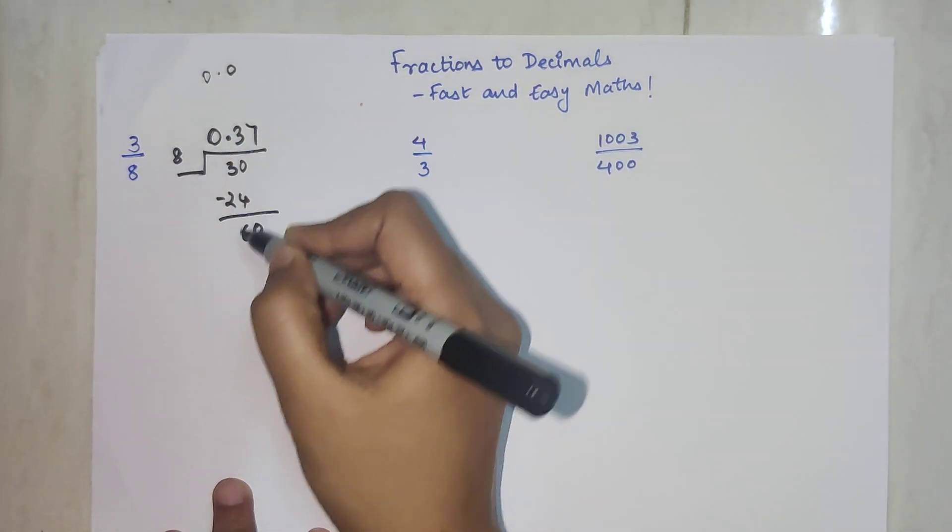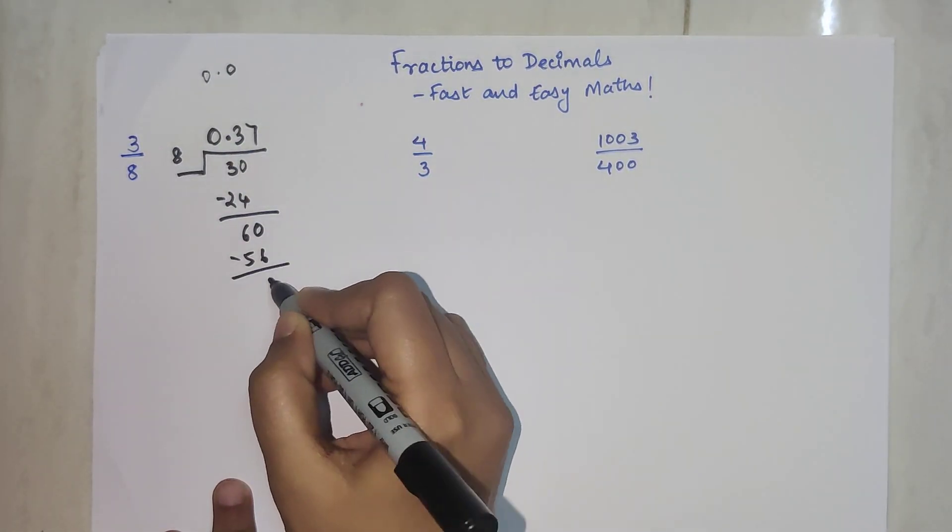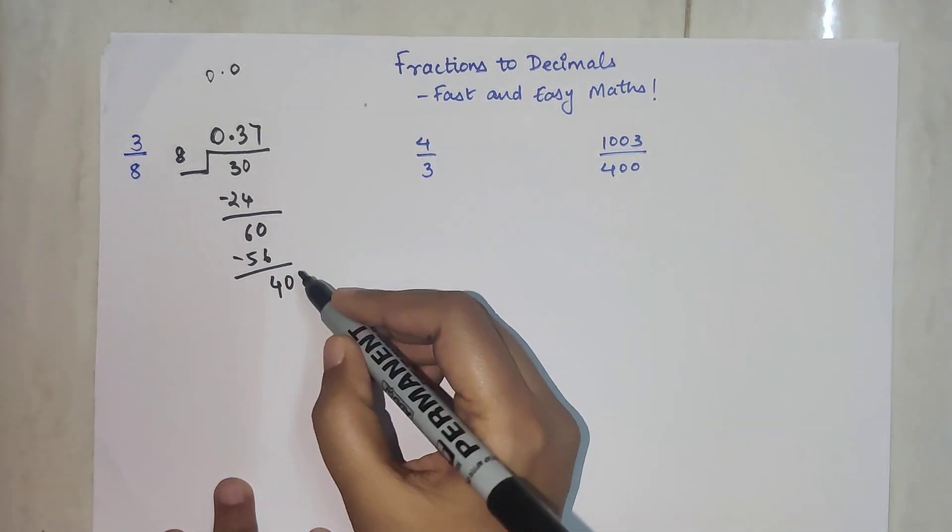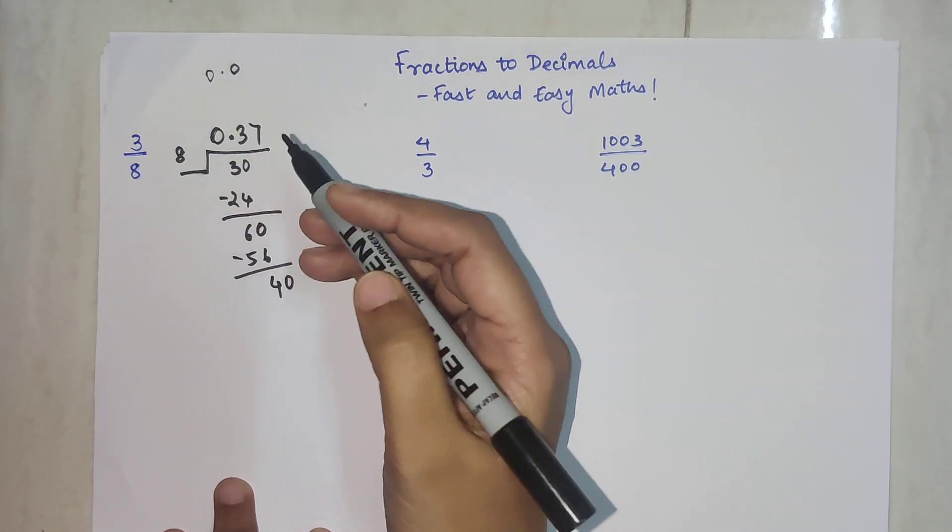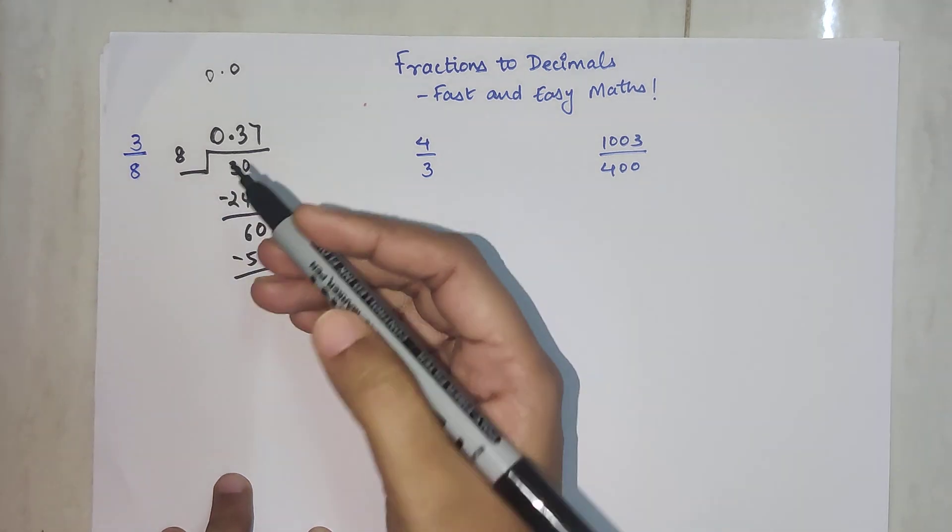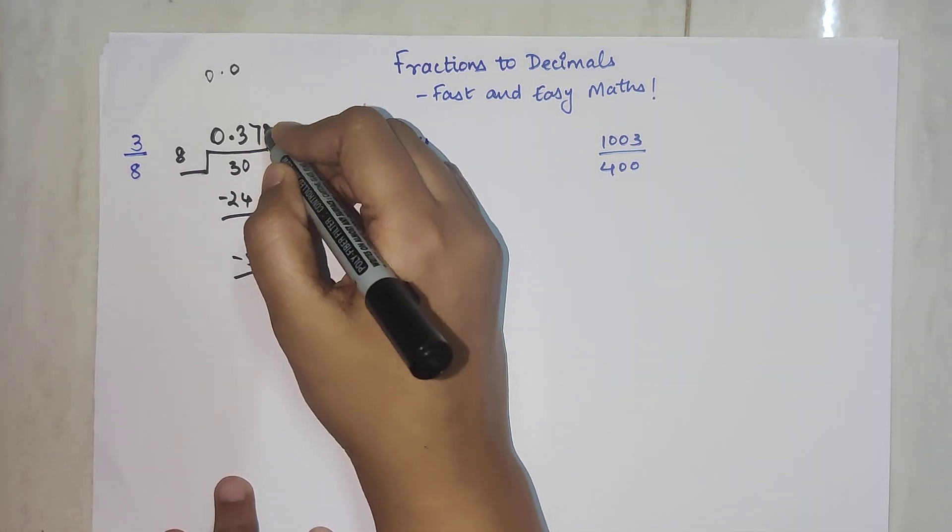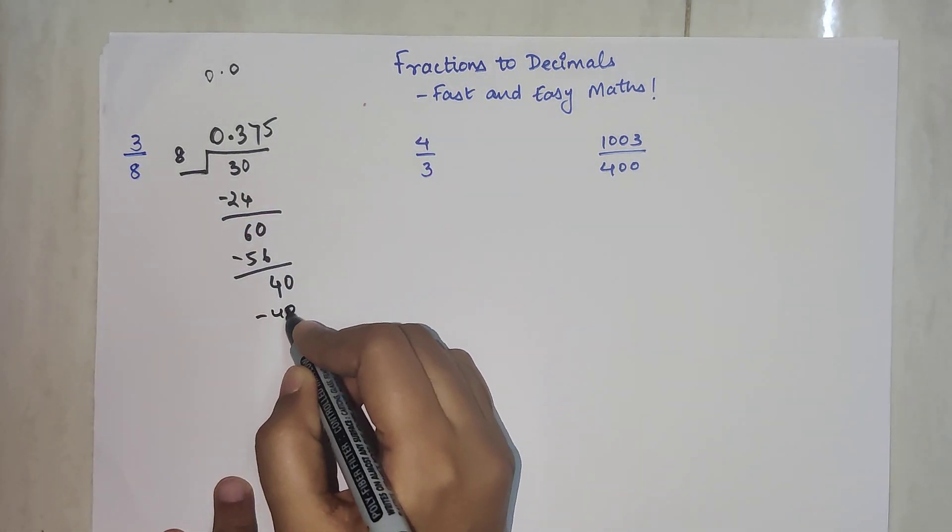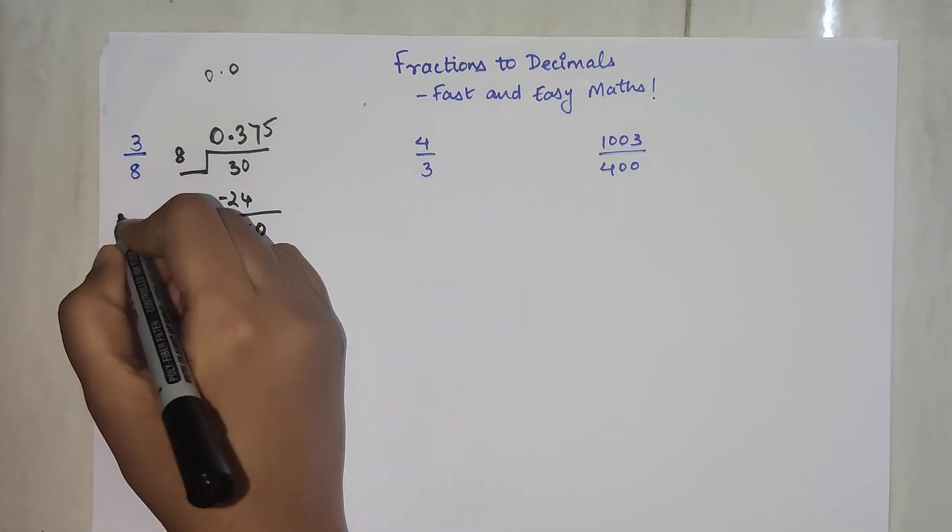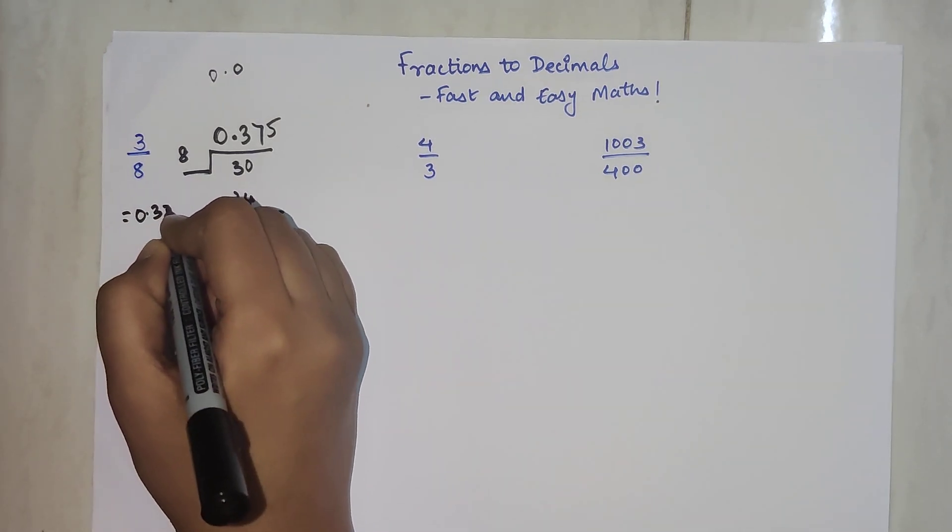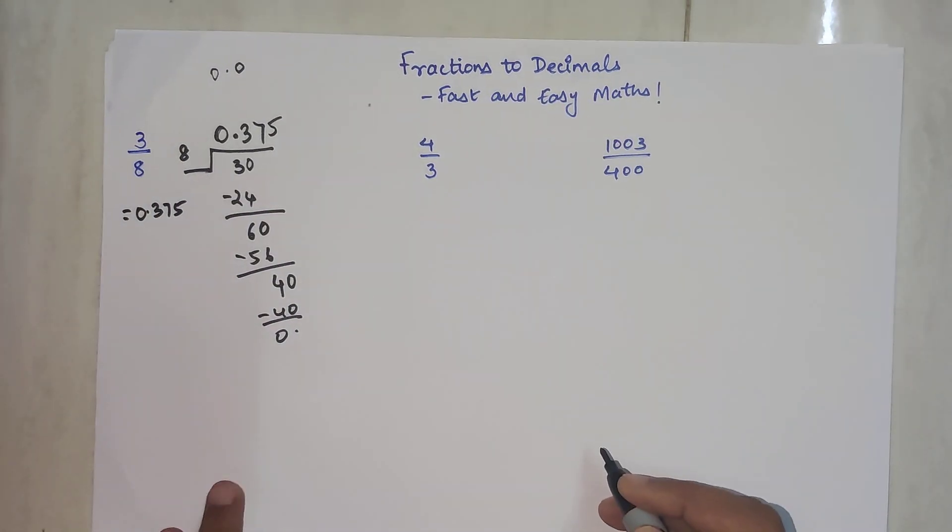Now here, this is 7, we get 56, we're left with 4. We can take a 0. I don't have to add any 0 in my quotient because the decimal point allows me to add one 0 at least. This is 5 and this is 40. So my answer here is 0.375.